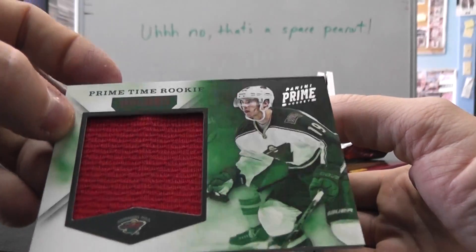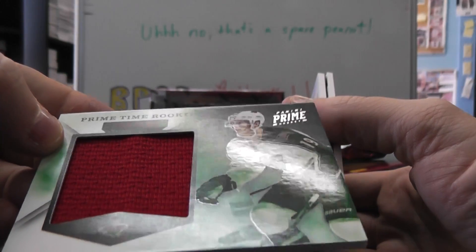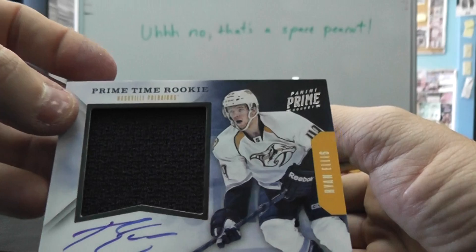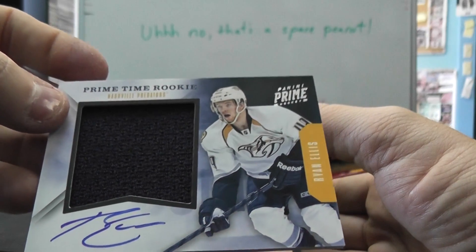Then jumbo jersey of Brett Bulmer numbered in $99, then numbered to $50 jersey autograph Ryan Ellis.